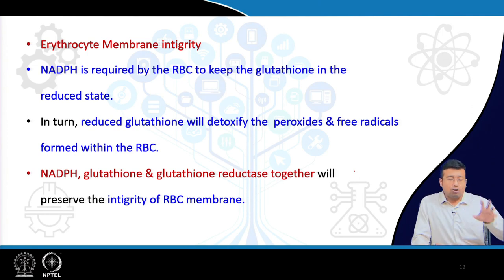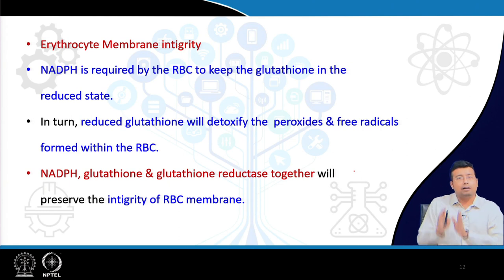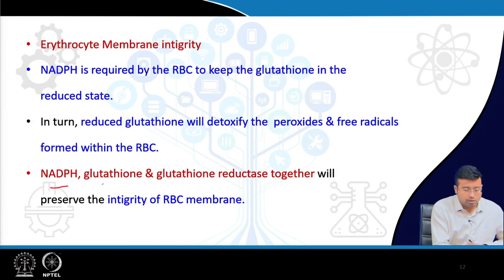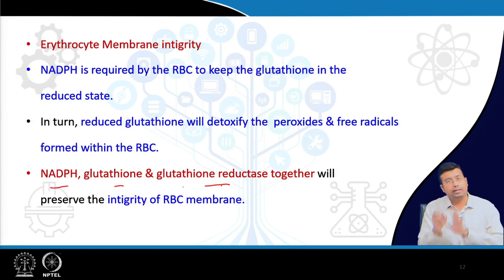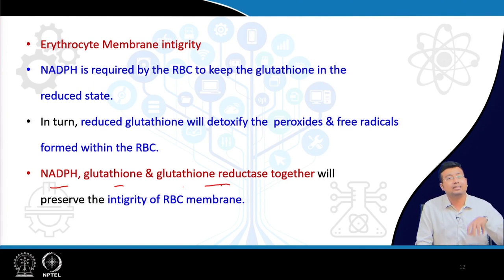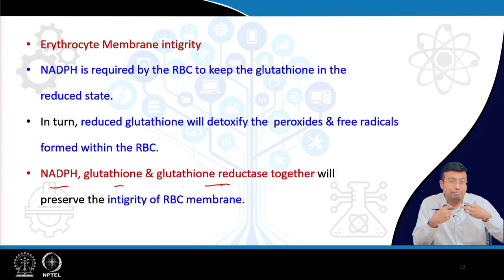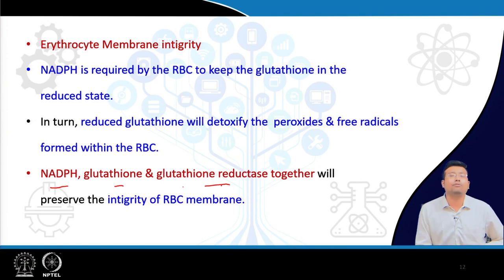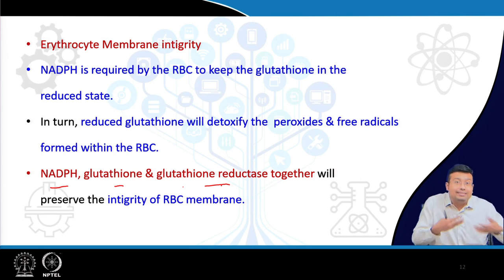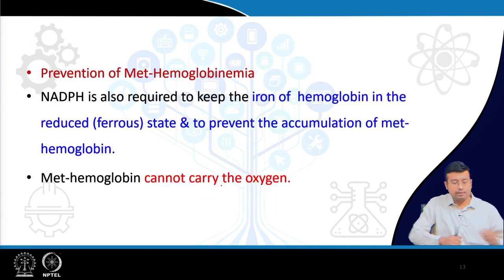Normally, RBC membrane is maintained intact due to the action of NADPH, glutathione, and glutathione reductase. If free radicals are left unchecked, it leads to loss and destruction of the RBC membrane. NADPH, glutathione, and glutathione reductase help maintain the integrity of the RBC membrane; since the major source of NADPH is HMP shunt, HMP shunt is actually protecting erythrocyte membranes from free radical damage.